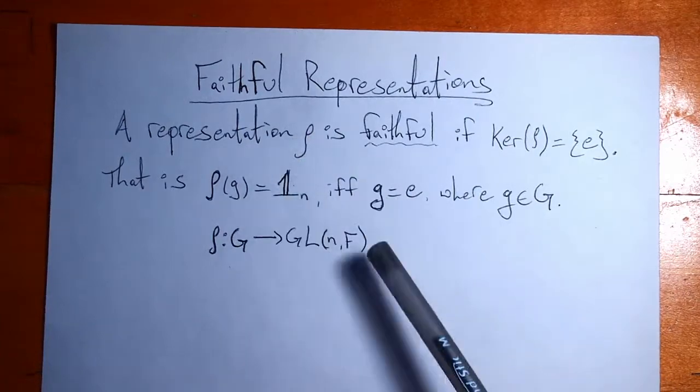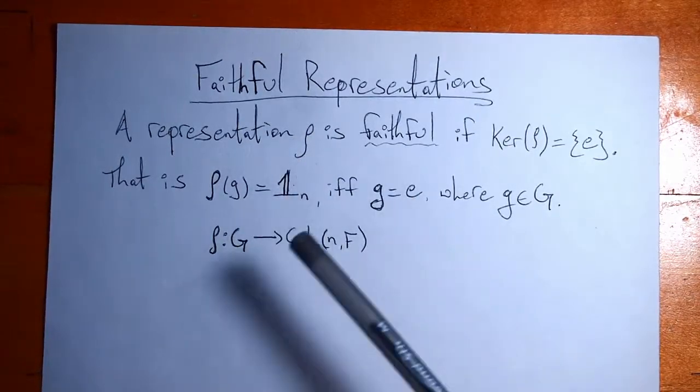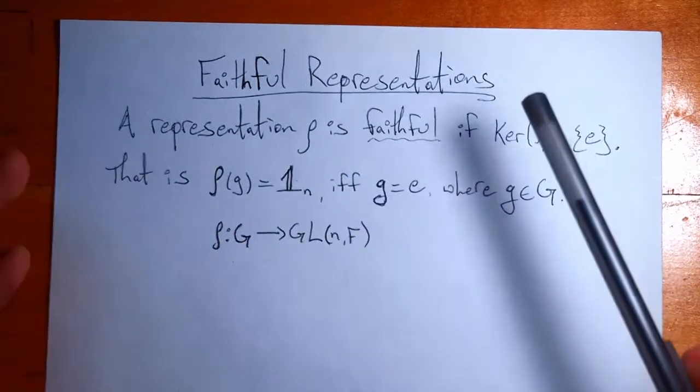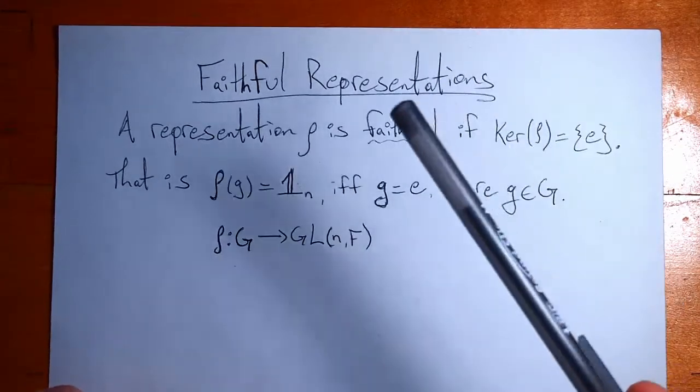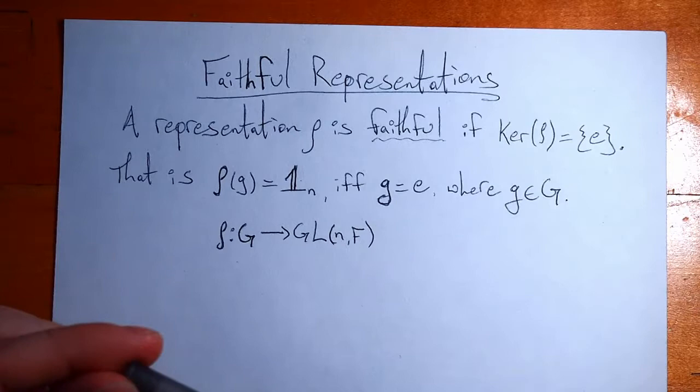It's all the standard facts of rho being a representation. So you can categorize representations into two different groups. There's a lot of different ways that you can break up representations. But one is as faithful or unfaithful. Or as one of my friends likes to say, faithful and slug.